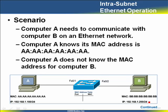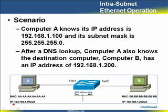We're going to show you two examples here — one about communication within a subnet, and another showing communication between computers on separate subnets. This first one is intra-subnet communication. We've got a scenario where Computer A needs to communicate with Computer B. Computer A knows its MAC address — this made-up all-A's MAC address for simplicity. Computer A does not know Computer B's MAC address. We also have a switch that does not yet know any MAC address information about what's plugged into it.